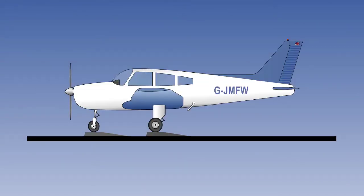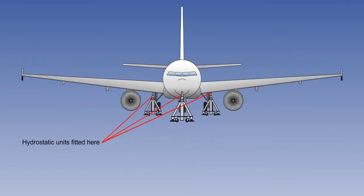There are a number of ways of weighing an aeroplane accurately and the equipment used will depend on the size of the aeroplane being weighed. For most light aeroplanes, a weighbridge scale is used which consists of a separate weighing platform placed under each wheel assembly. Larger, heavier aeroplanes will require the use of hydrostatic units which consist of a closed hydraulic cylinder interposed between a lifting jack and a jacking point.